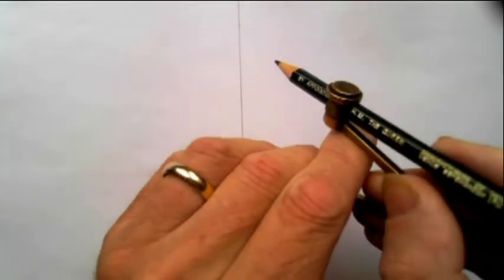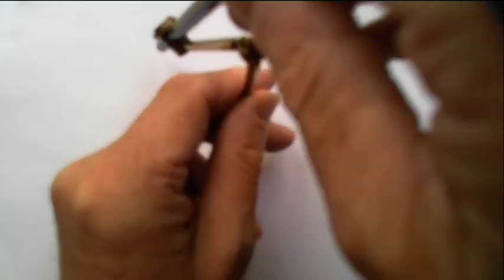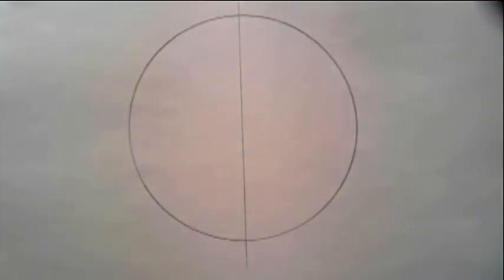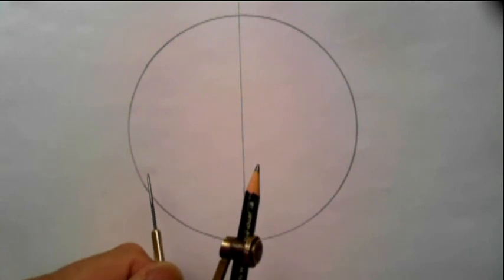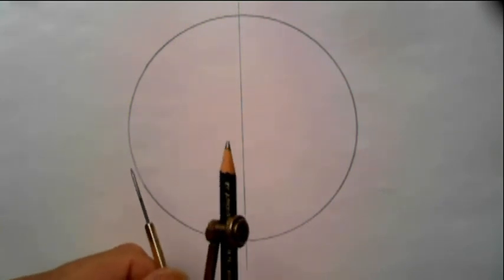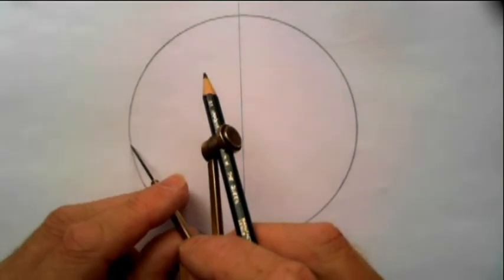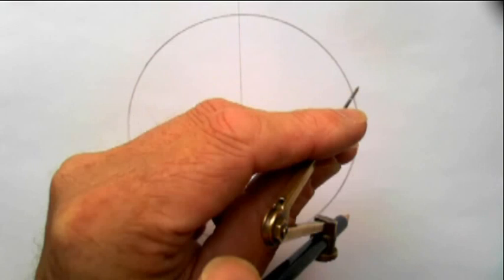a circle like that. Now I was taught at school that the radius of a circle goes six times into the circumference of the circle and the way to draw it is to make a mark and step it round like that six times.